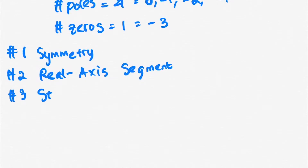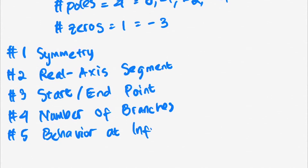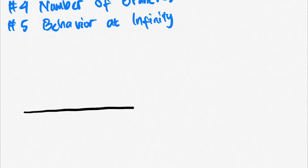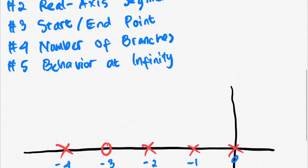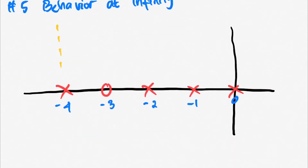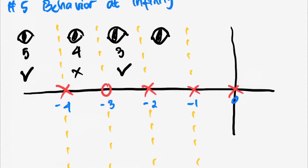Let's check the criteria we discussed earlier: symmetry, real axis segments, start and end points, number of branches, and the behavior of the system as it approaches infinity. We see that the poles and zeros are symmetric about the real axis. Regarding the real axis segment, there are five odd-numbered poles and zeros, so there will be a root locus there. Where there are only four even-numbered poles and no zeros, there won't be a root locus. This confirms our theory.